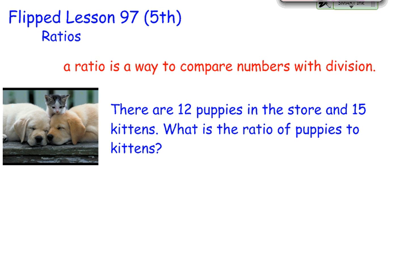We've got some special rules that go along with ratios that we want to make sure you're paying attention to — follow those rules. Now for example, it says there are 12 puppies in the store and 15 kittens.